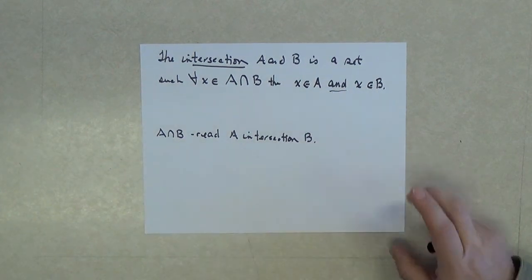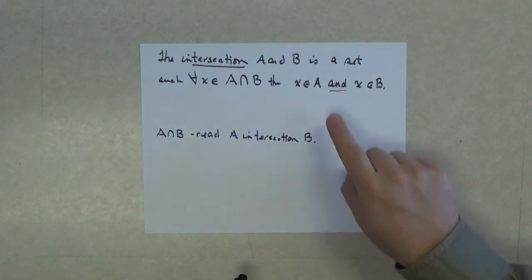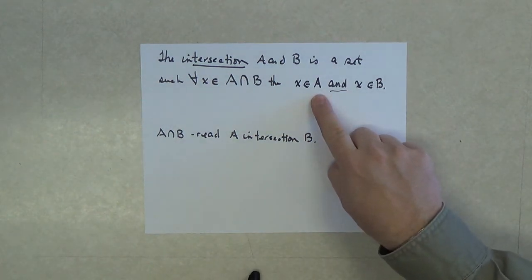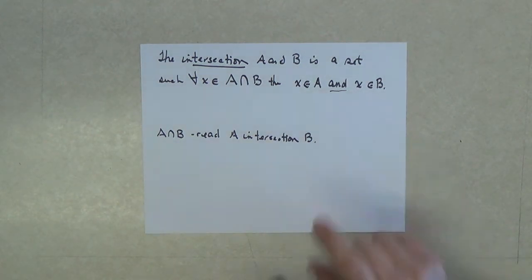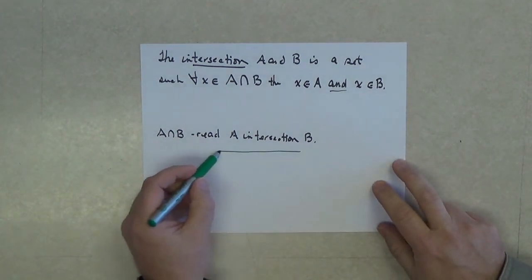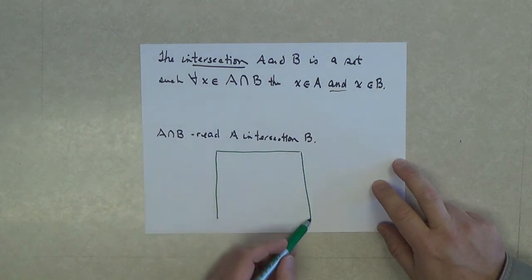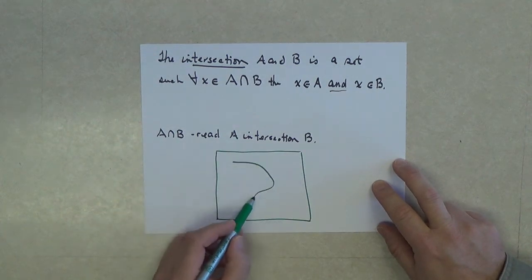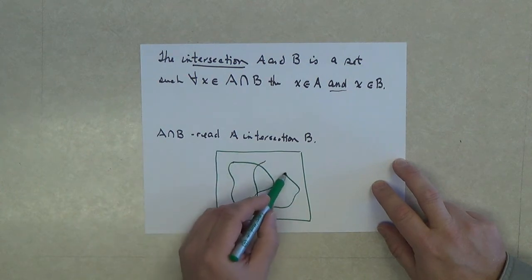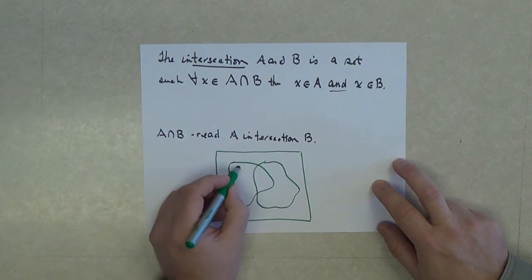Notice, in this definition, it's not OR. It's claiming that X must be an element of A and X must be an element of B. If we were to draw a Venn diagram and place two sets in it, we'll sprinkle some letters or numbers in here.